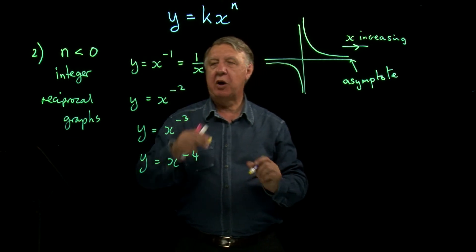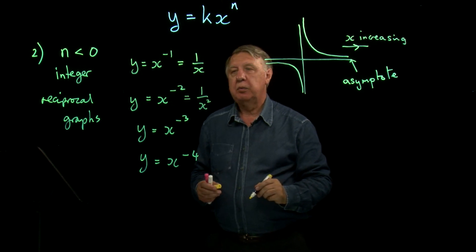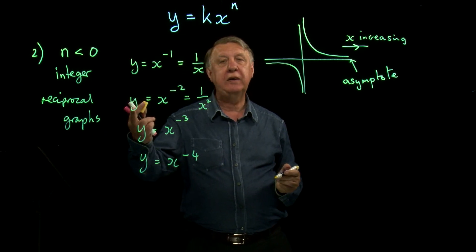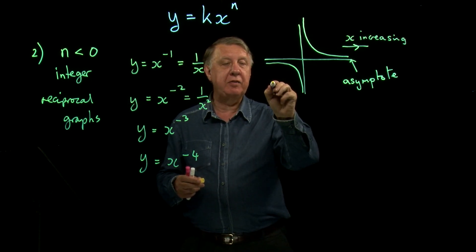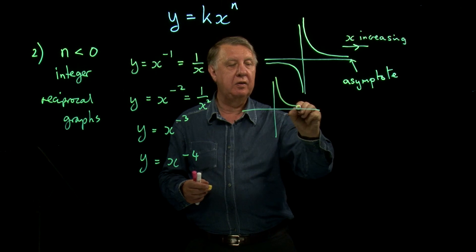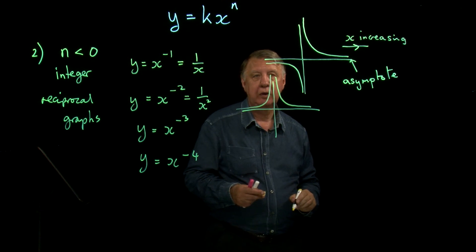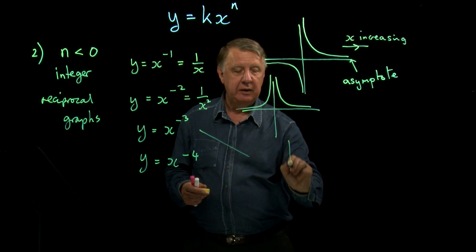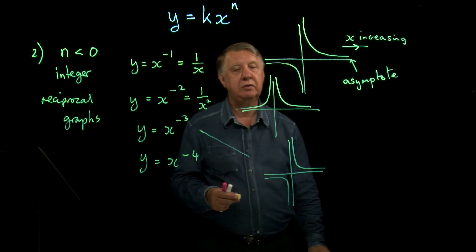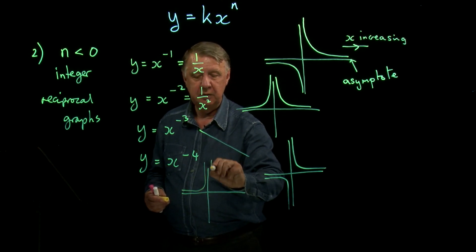Now x to the minus 2 means 1 over x squared. So whatever x is, it's going to be squared, which means that y can't be negative. And so we now have a reciprocal graph which cannot be below the x axis and so it does that. And as we go down here, the x cube graph does that. And the x to the fourth graph, you get the idea now, don't you? We'll do that.